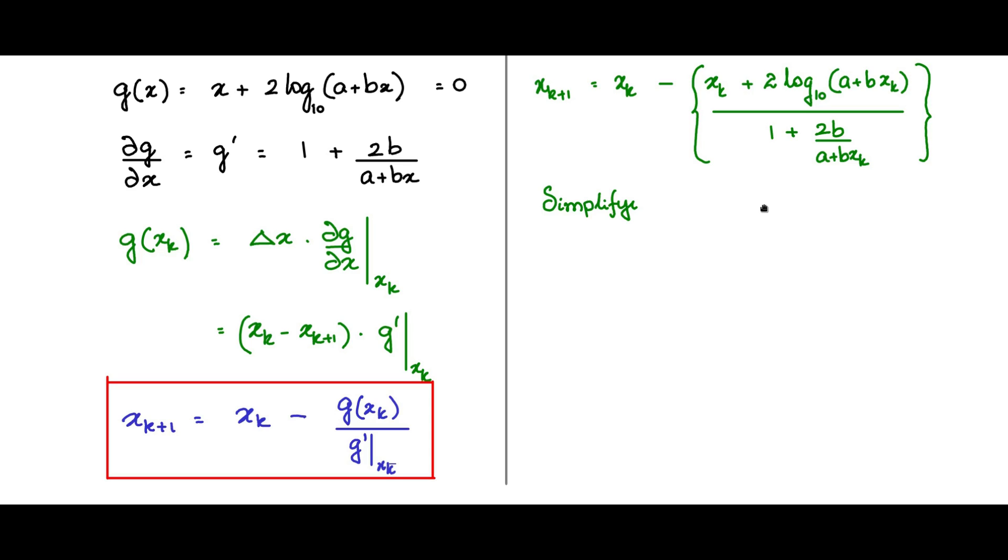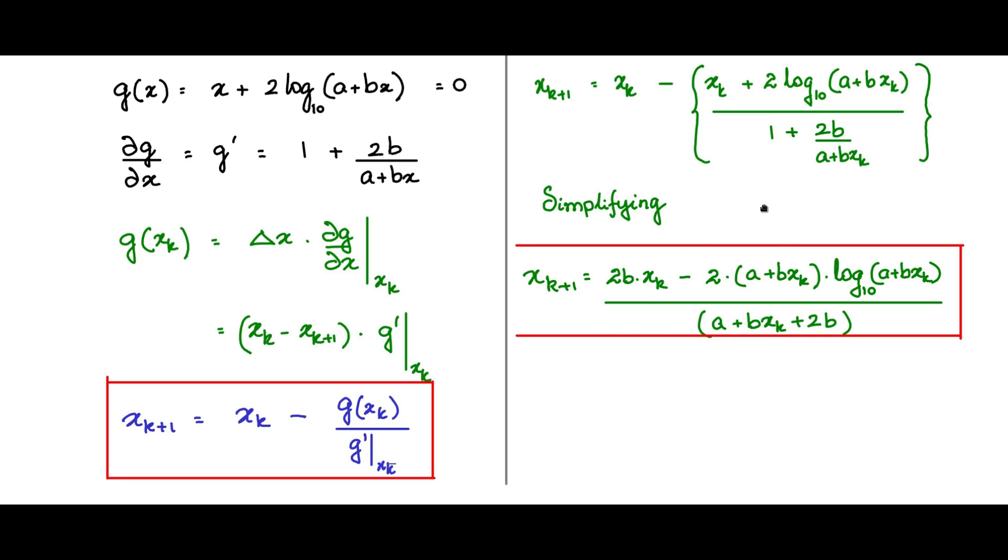On simplifying we get x k plus 1 is equal to 2 b x k minus 2 a plus b x k log to base 10 a plus b x k whole divided by a plus b x k plus 2 b. This is the entire simplified iterative equation that we would like to numerically compute.